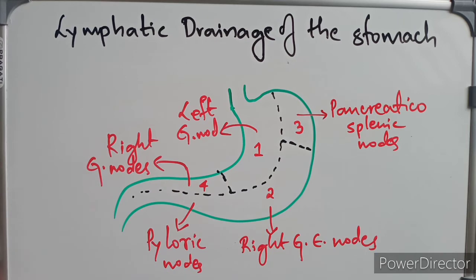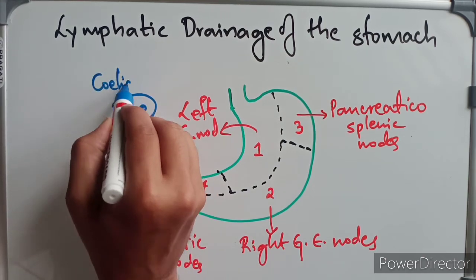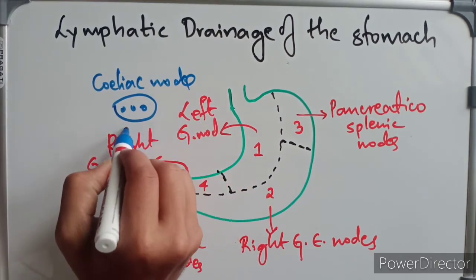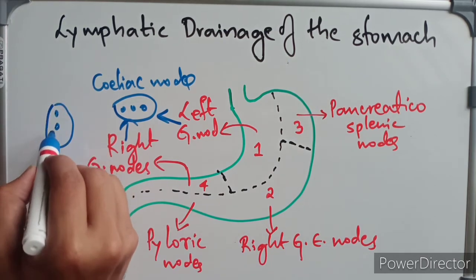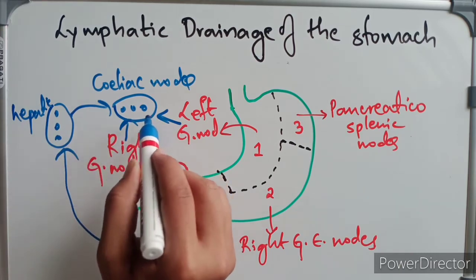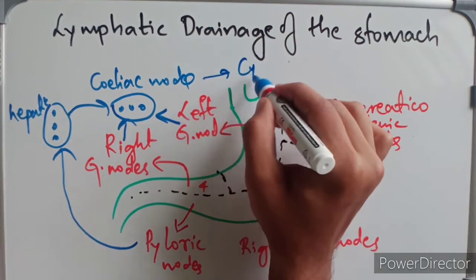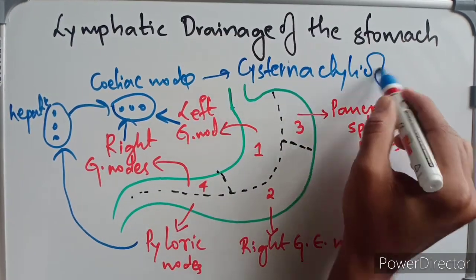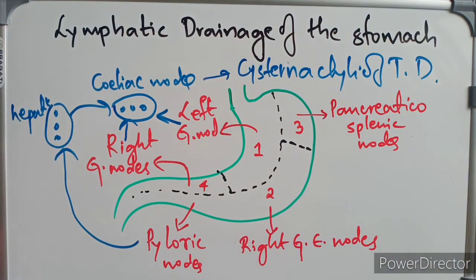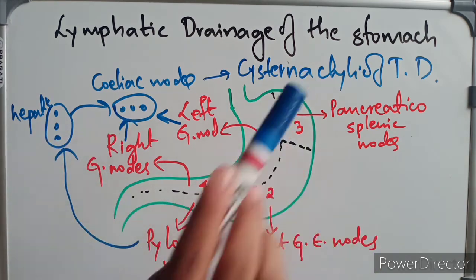The left and right gastric nodes drain further into the celiac nodes. The pyloric nodes drain into the hepatic nodes, which further drain into the celiac nodes. The lymph from the celiac nodes drains into the cisterna chyli of the thoracic duct, which is the largest lymph vessel of the body. So the stomach's lymphatic drainage flows from regional nodes into the celiac nodes, then into the cisterna chyli of the thoracic duct.